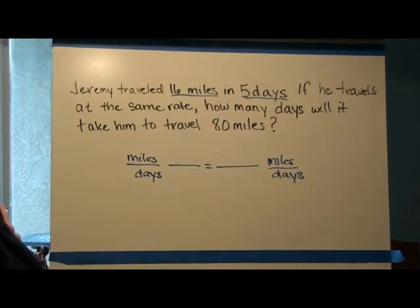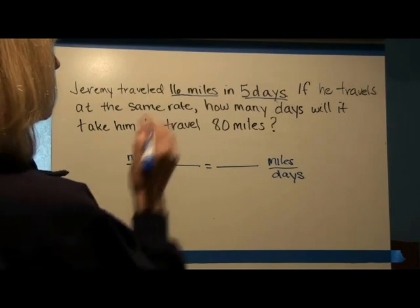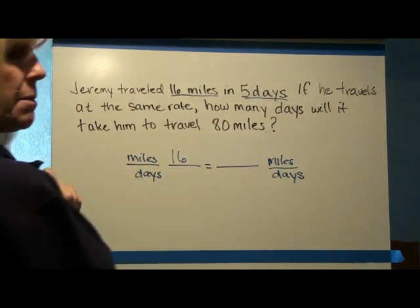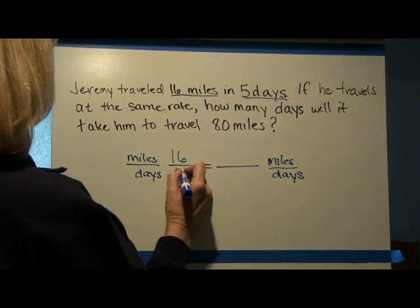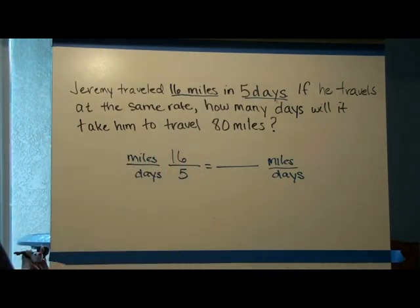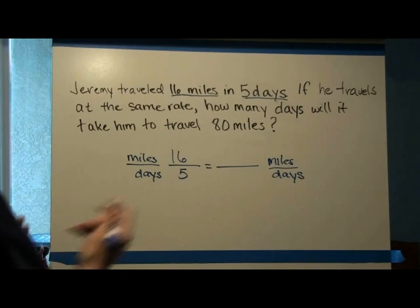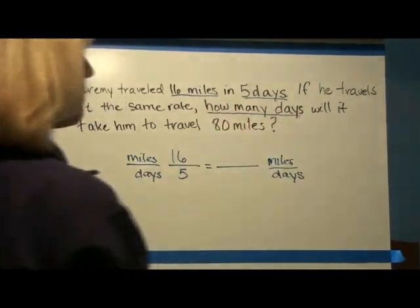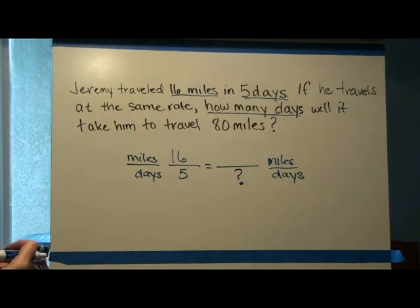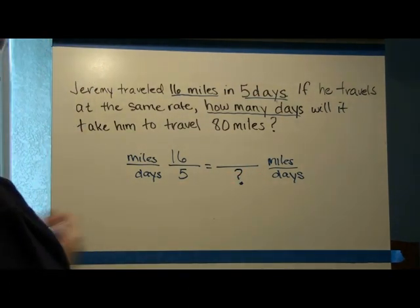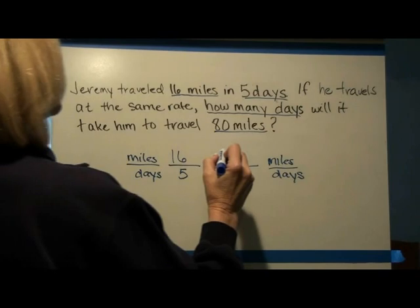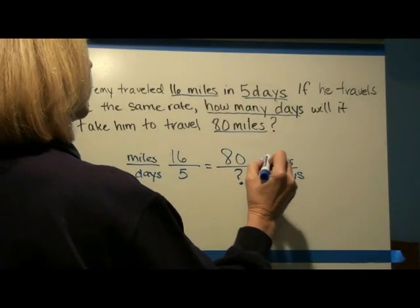Now let's plug in our information. From the first sentence, we have that 16 miles is compared to five days, so we're going to put the 16 next to miles and the five next to days. On the other side of the proportion, we're going to put what we don't know — how many days — so we put a question mark in that spot. We do know that Jeremy is going to travel 80 miles, so we put the 80 next to miles.